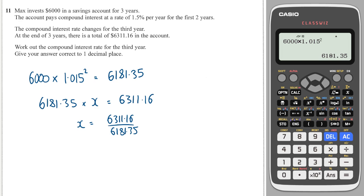I go to my calculator and take 6,311.16 and divide it by 6,181.35. I get 1.021 and then lots of zeros afterwards, so we can ignore the bits after that. That's quite a good number.